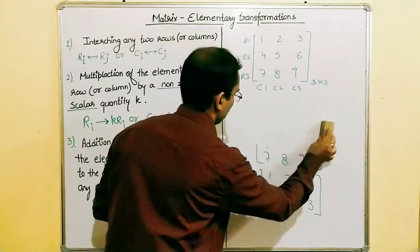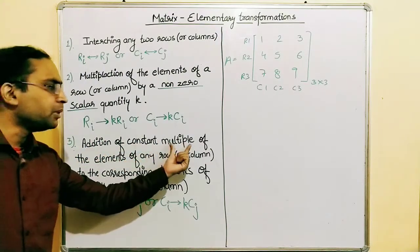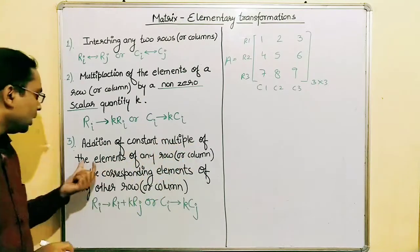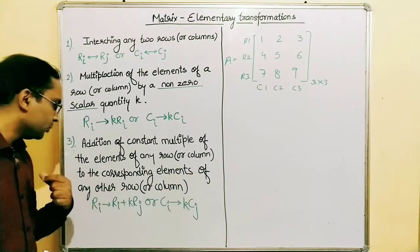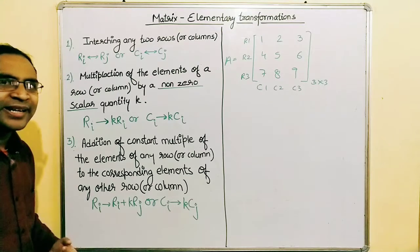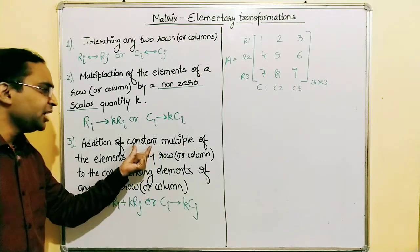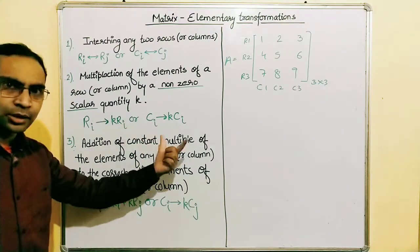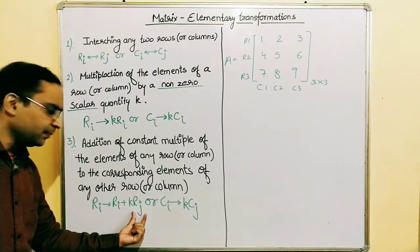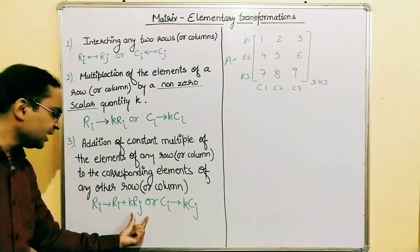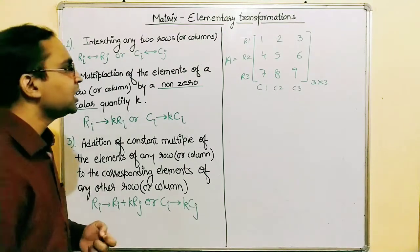The third elementary transformation is the addition of a constant multiple of the elements of any row to the corresponding elements of any other row. This means we multiply the elements of one row by a constant and then add the result to another row. It is represented as R_i → R_i + k·R_j, where R_j is multiplied by the constant and added into R_i.